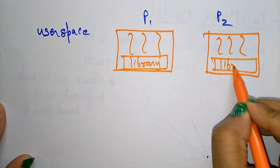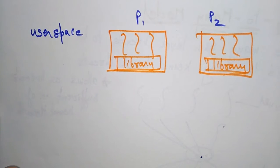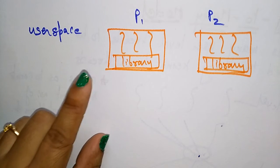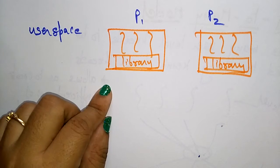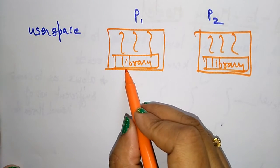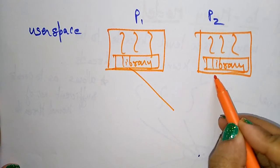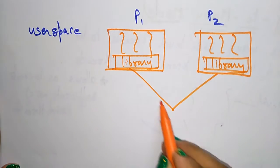It shares the library function which contains the code of how to create and destroy the thread and to maintain and schedule the threads. These threads from process one and process two, the multiple threads share...